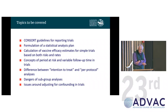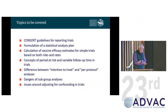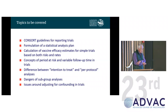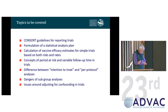I'm going to talk about the statistical aspects. I'm going to cover the CONSORT guidelines, the formulation of a statistical analysis plan, the calculation of vaccine efficacy estimates and confidence intervals for simple trials based on both risks and rates, the concept of a period at risk and variable follow-up time, the difference between intention-to-treat and per-protocol analyses, some of the dangers of subgroup analysis, and a little bit about adjusting for confounding in trials.